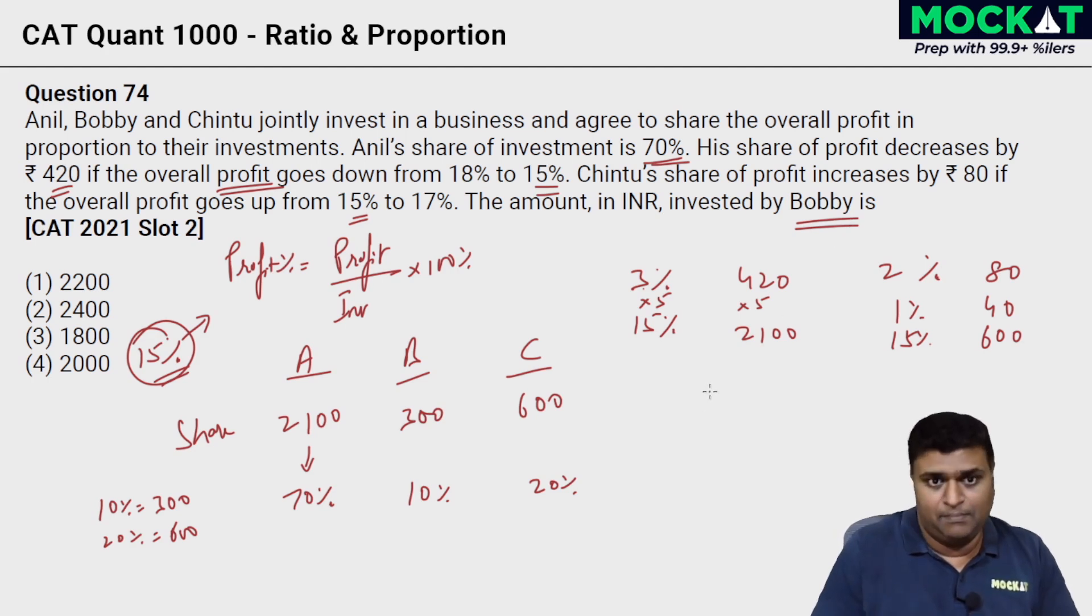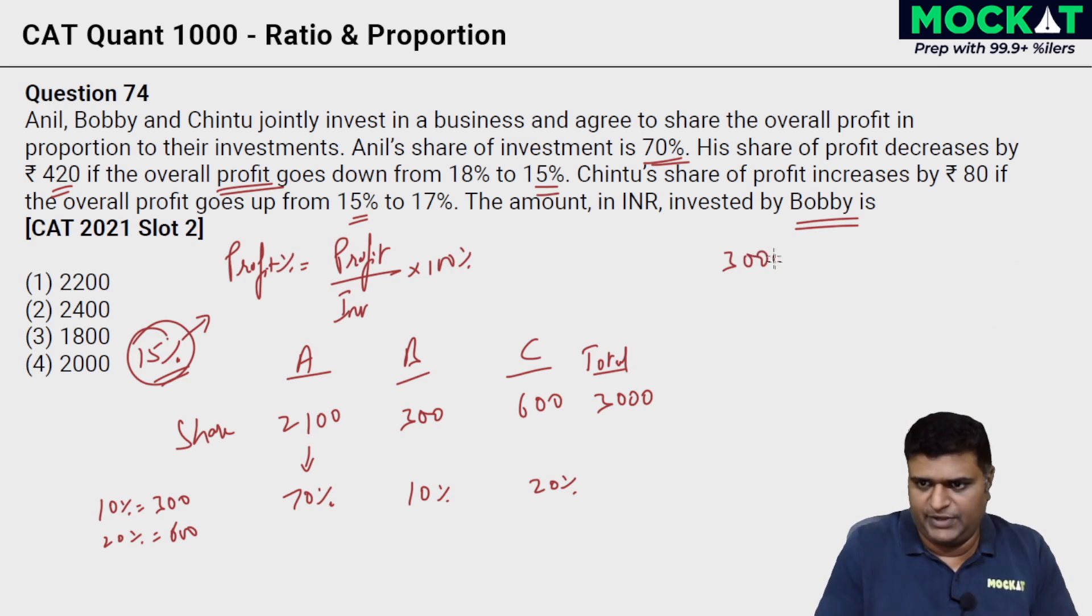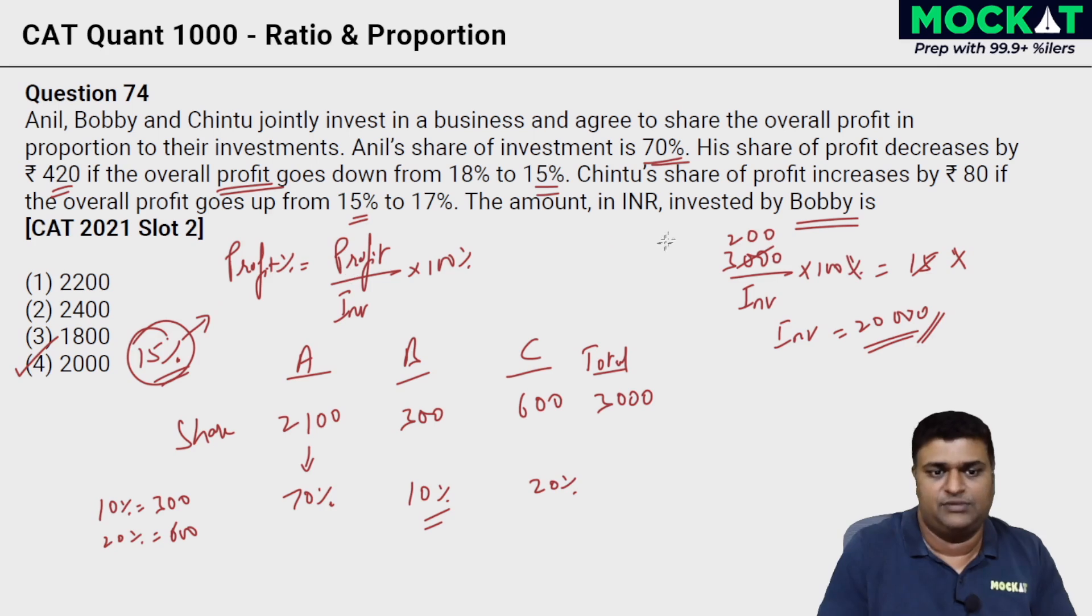Now the question is what is the amount in INR invested by Bobby? What's the total profit? At 15%, total profit is nothing but sum of all of these which comes to 3000. This 3000 rupees divided by the actual investment which happened into 100% should be my profit percent of 15. That's the formula - profit by investment into 100%. The profit is 3000 by investment into 100%, that is 15%. If the profit percent is going to be 15%, we wrote all these values. Simplify this and you'll get the answer. 15 over here I can divide and I get 200, and investment is nothing but 20,000. The amount invested by Bobby is nothing but Bobby is 10% of 20,000, which is nothing but rupees 2000. Option 4 is the answer here.